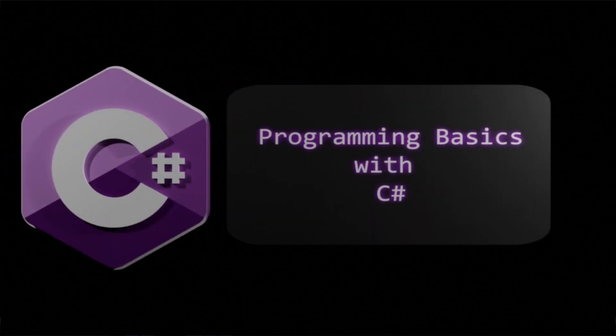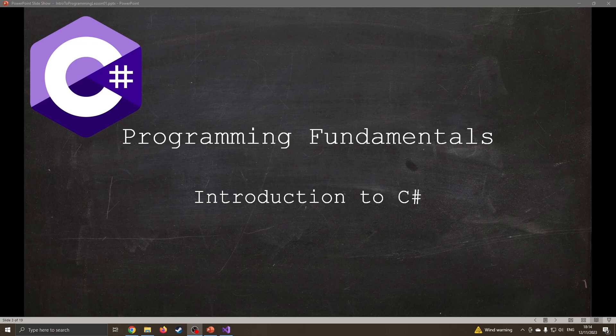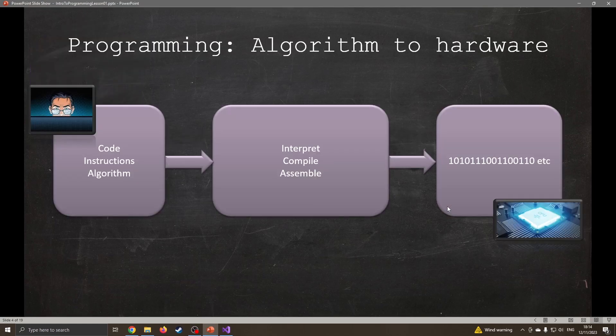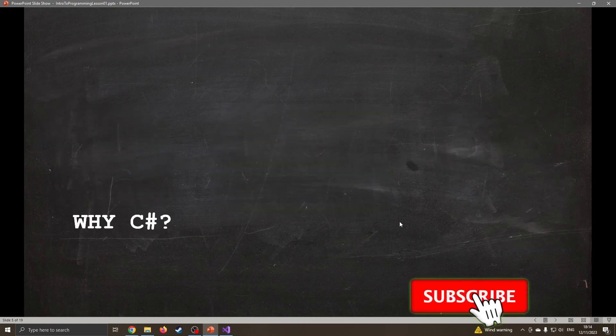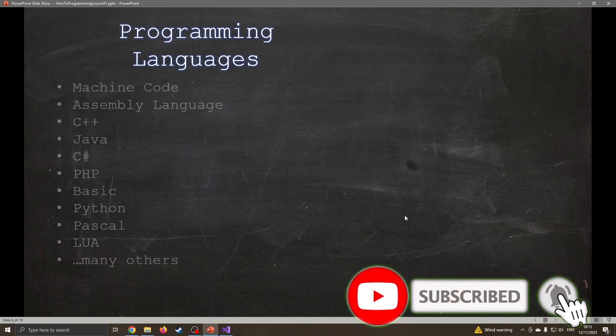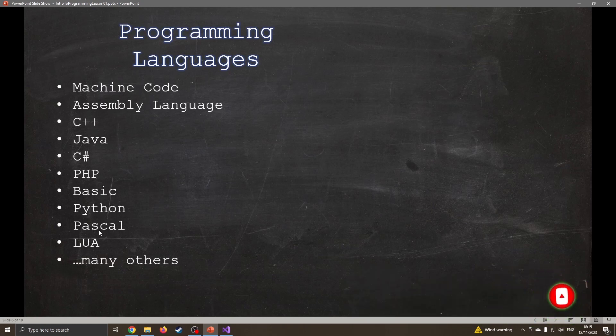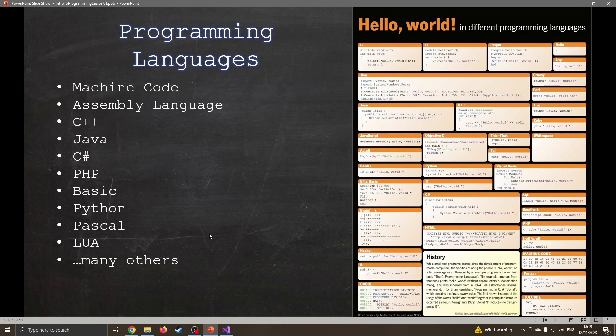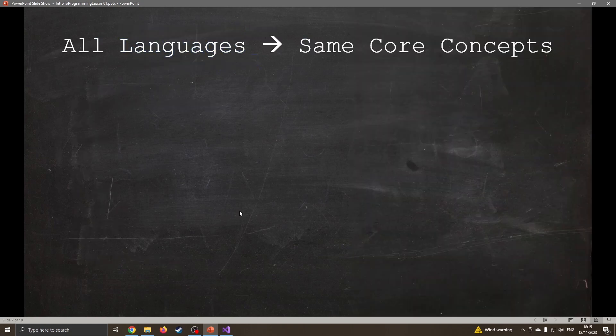Hello and welcome to lesson one in programming fundamentals and our introduction to C sharp. Programming comes down to us entering some code, some instructions, an algorithm, and then the computer can interpret it, compile it, or assemble it into binary so it can run on the hardware. So why C sharp? Well, there's lots of different programming languages from machine code, C++, Java, Python, Pascal, Lua. There are loads of programming languages out there.